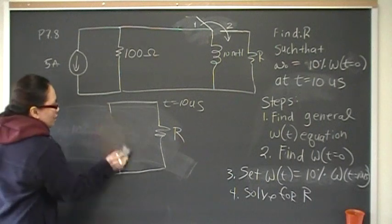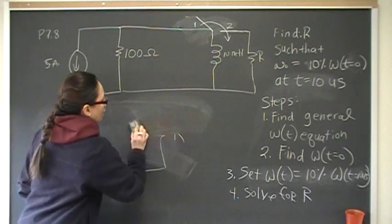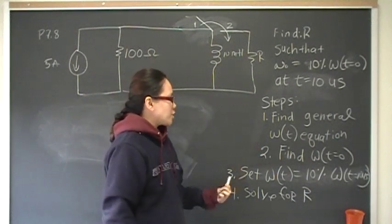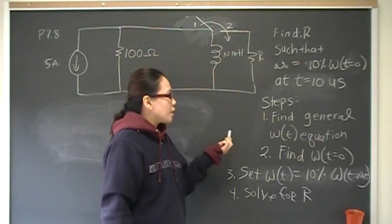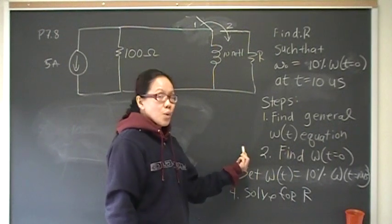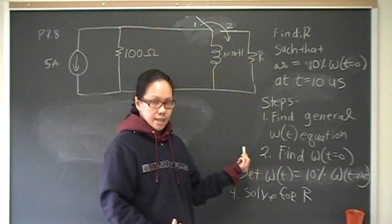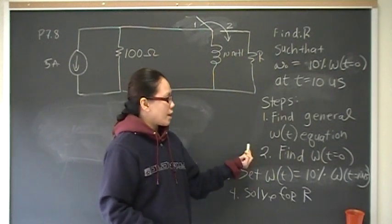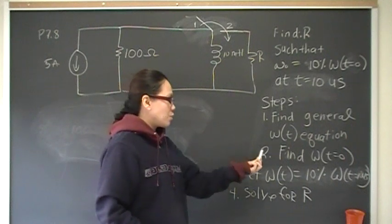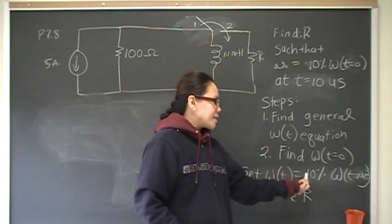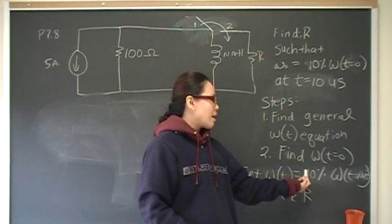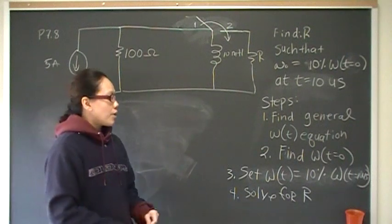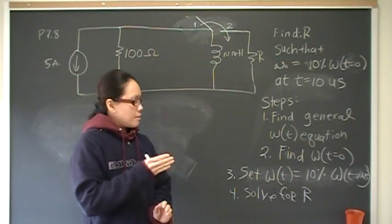So the steps to do that will be, first, we need to find the general energy equation for the inductor. After we find the general energy equation, we can set that equation to time zero and find out what is the initial value of energy that is stored in that inductor at time zero. We need that because knowing that, we can multiply it by 0.10 and find 10% of what's left. That was part one of our problems, to find the time,